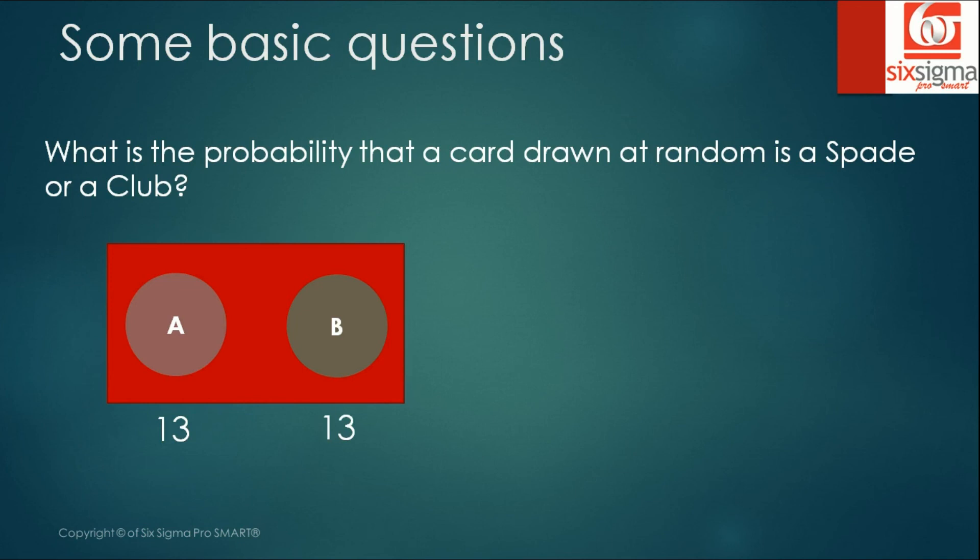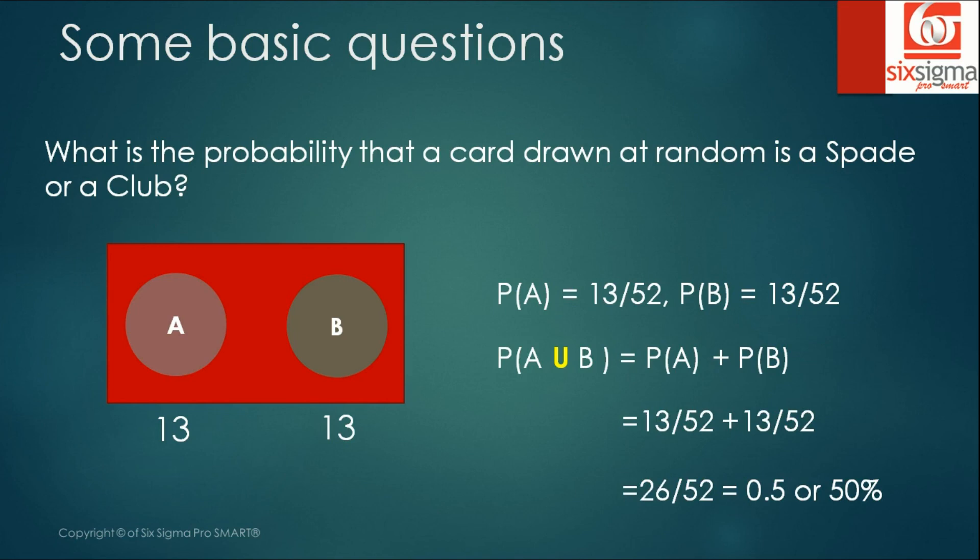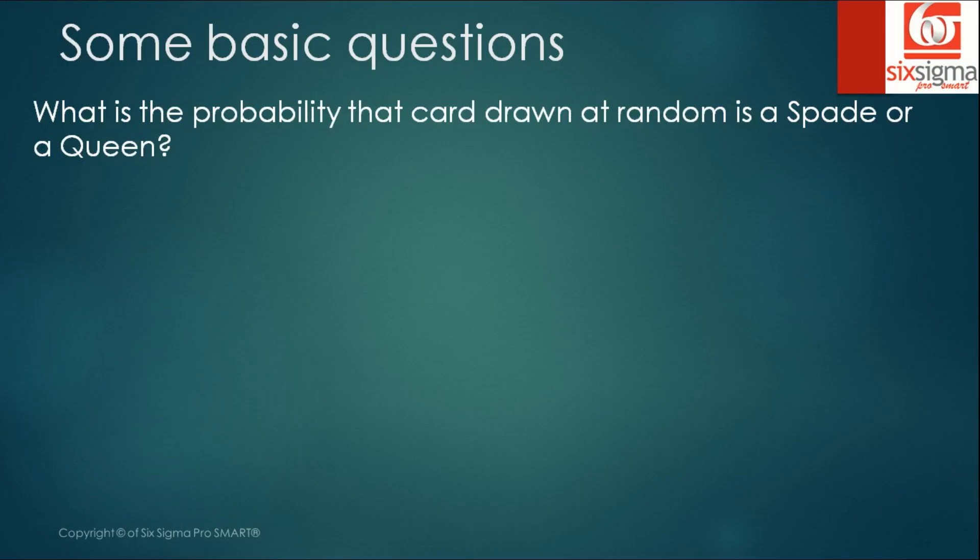Both the possibilities are equal to 13. We have 13 spades and 13 clubs. So the probability of A or B which are equal in this case is equal to probability of A plus probability of B. And if you calculate it, this comes out to be 50 percent.